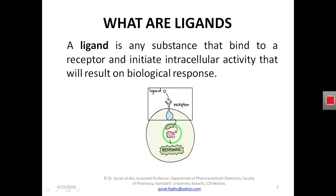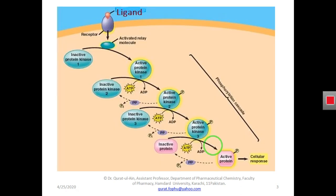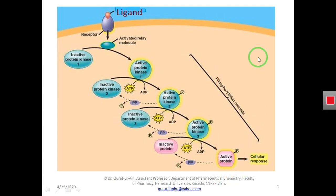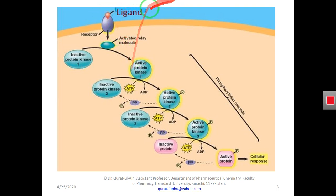A ligand can bind a receptor, initiate intracellular activity, and result in a cell response. There are two basic questions: what is this intracellular activity and what is this cell response? To understand, we will learn about each one. To learn about intracellular activity, I have chosen a simple diagram. We can see that a ligand is a chemical message — a molecule that binds with the receptor and initiates intracellular activity.